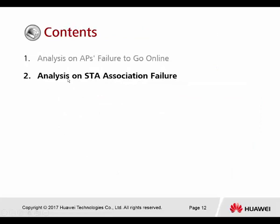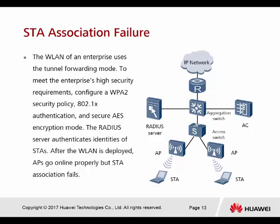Next is analysis on STA association failure. The WLAN of an enterprise uses tunnel forwarding mode. The enterprise prefers tunnel forwarding mode and is not going to use direct forwarding, to meet the enterprise's high security requirements. They configure WPA security policy, 802.1X authentication, and secure AES encryption mode. The RADIUS server authenticates the identity of the STA. After the WLAN is deployed and the AP goes online properly, the STA association fails.